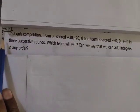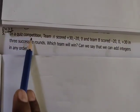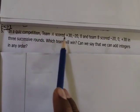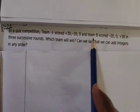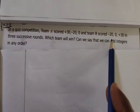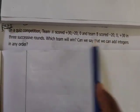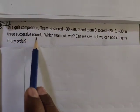Like this, 1.1 is the fifth question. In a quiz competition, team A scored plus 30, minus 20, 0 and team B scored minus 20, 0, plus 30 in three successive rounds.